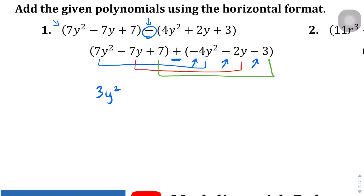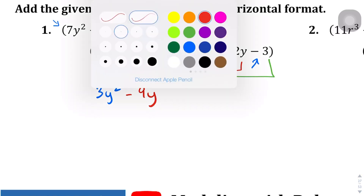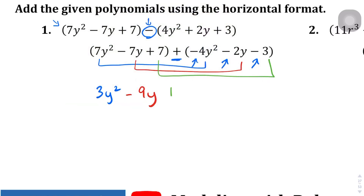Then negative 7y plus negative 2y is going to give us negative 9y. And then lastly, the 7 and the 3 — 7 minus 3 is going to give us 4. So this expression now becomes 3y squared minus 9y plus 4.